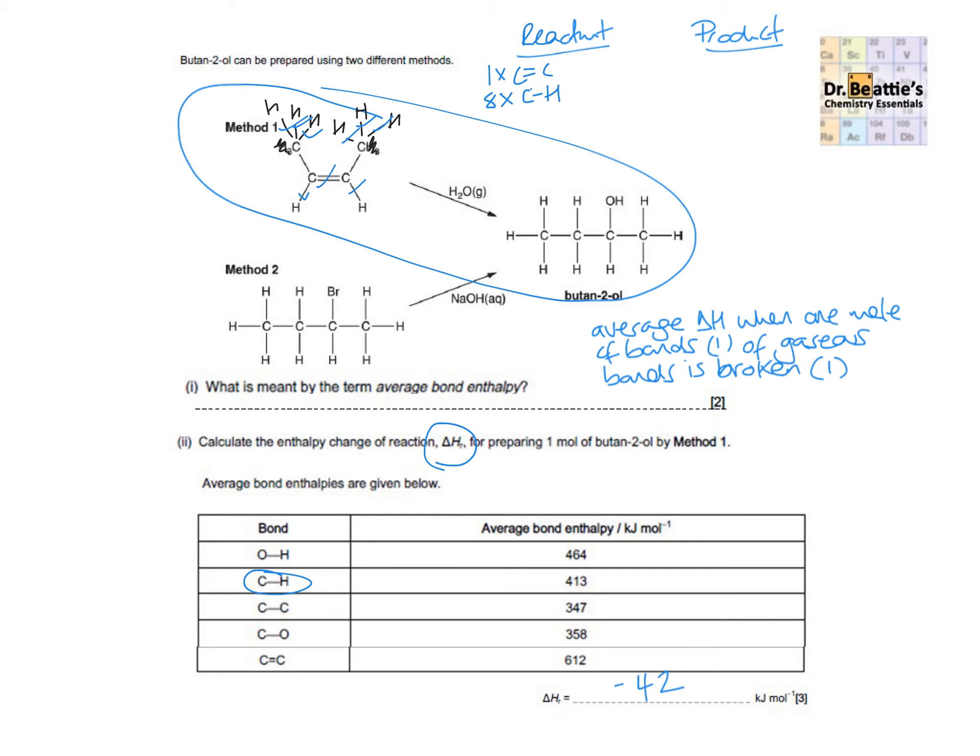And you can see this method of ticking off means that then we know we're left with two lots of C-C single bonds. If we do the same process for the product, we've got our nine CHs there. We've got a C-O bond here. And then here we've got an OH group. And so that is going to be an OH bond. And then we use the data table in order to substitute in the correct values.